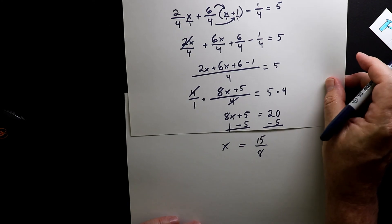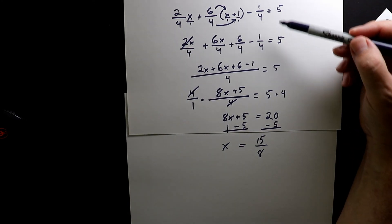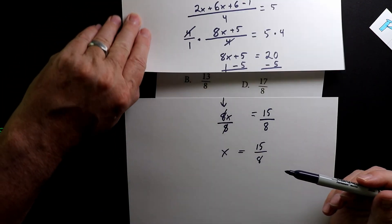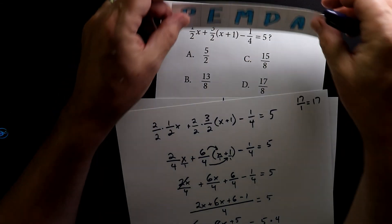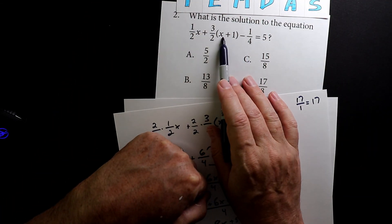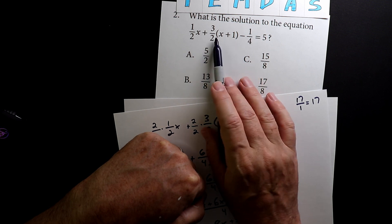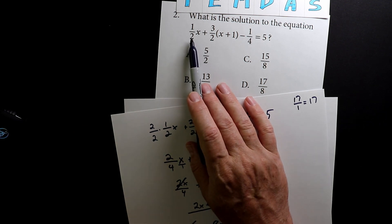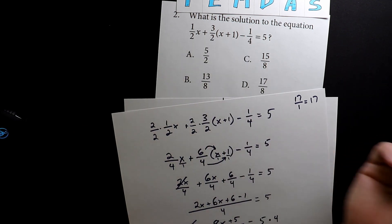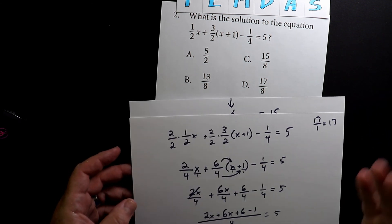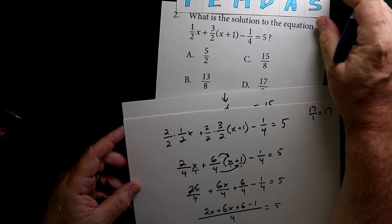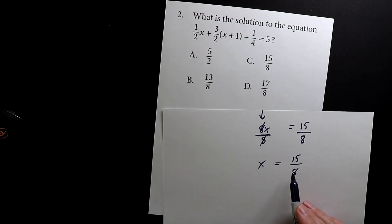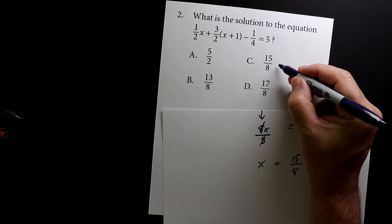So we've done our first algebra. It had seven steps to get to the final answer. But again, you need to know your order of operations a little bit. You need to know how to distribute when you multiply to both of these terms that are in the brackets. And then you have to make sure that all of your denominators are the same. So it's a bunch of steps, but when you break it down into individual steps, it's not impossible. So the final answer, x equals 15 over 8, is this one here.